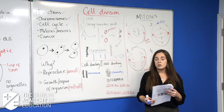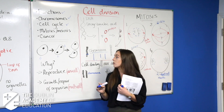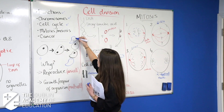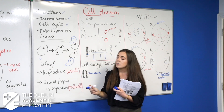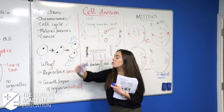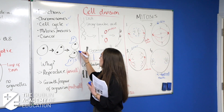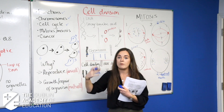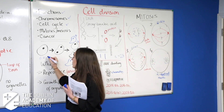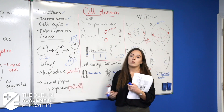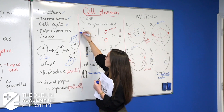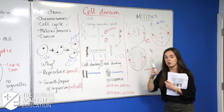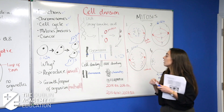Meiosis is different — you get four new cells, and the chromosome number is halved. So if the original was diploid (2N = 6 chromosomes), each of the four new cells would have three chromosomes and be haploid (N = 3). This is important for variation and reproduction in multicellular organisms.